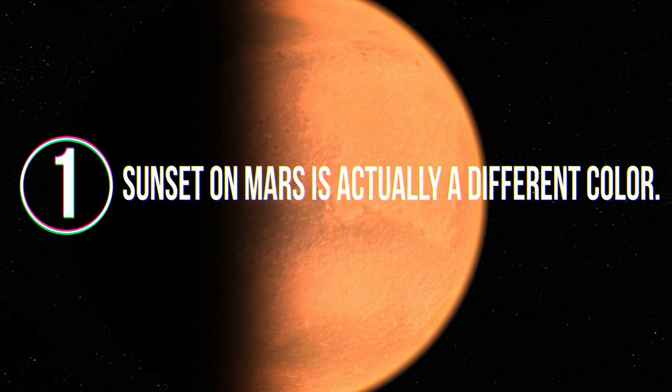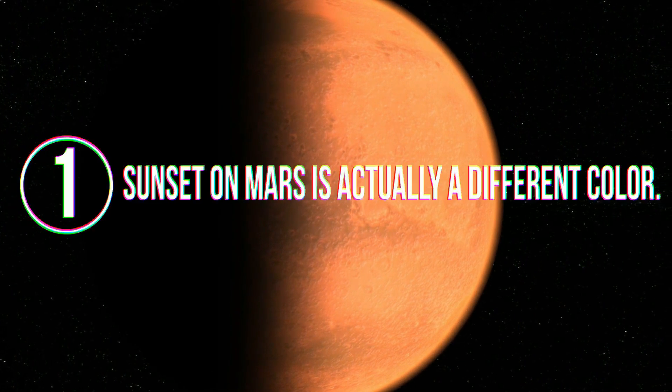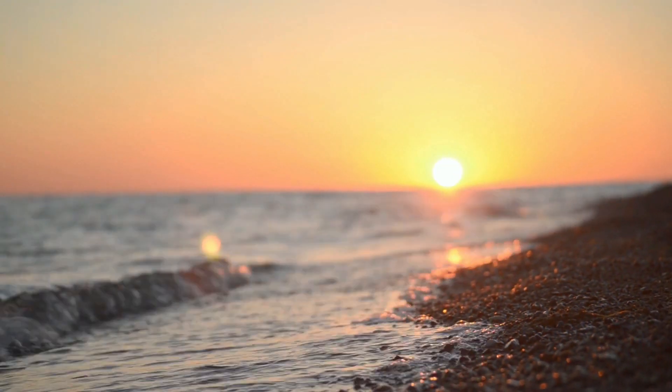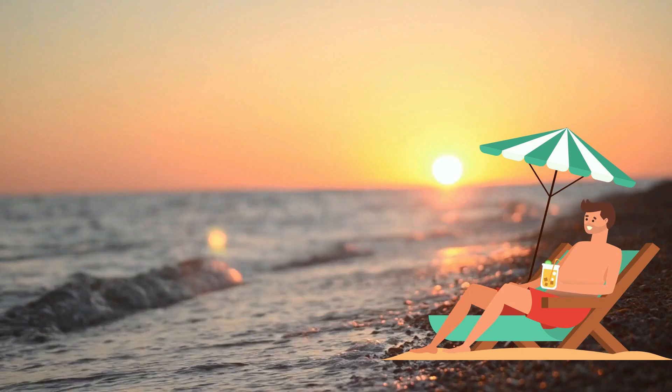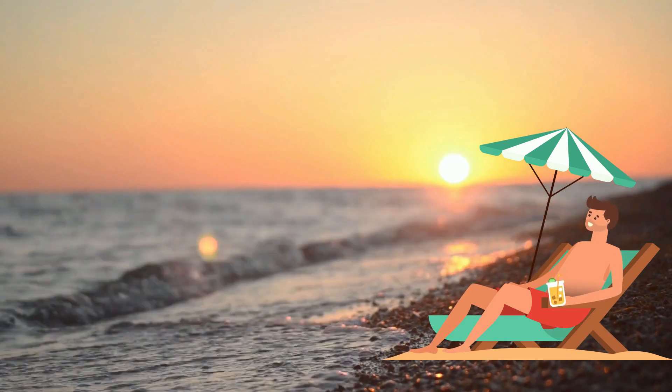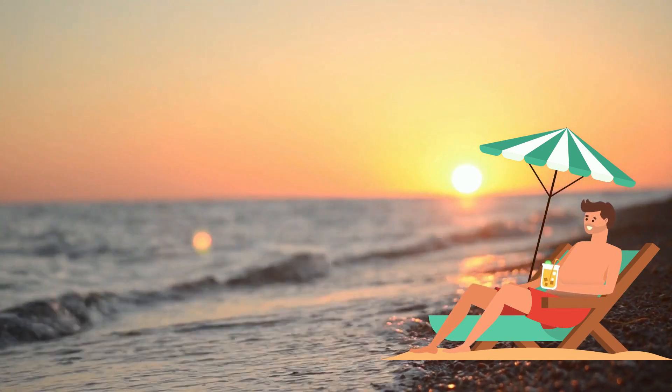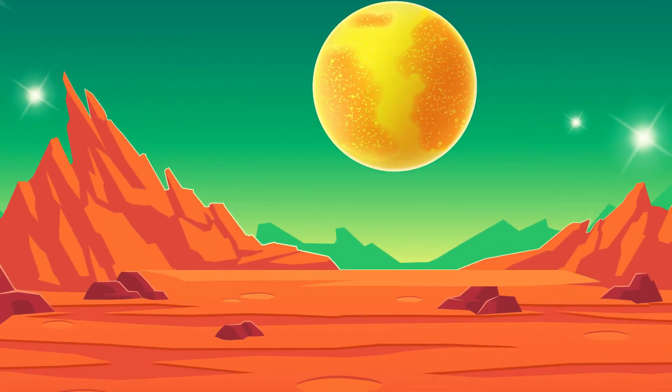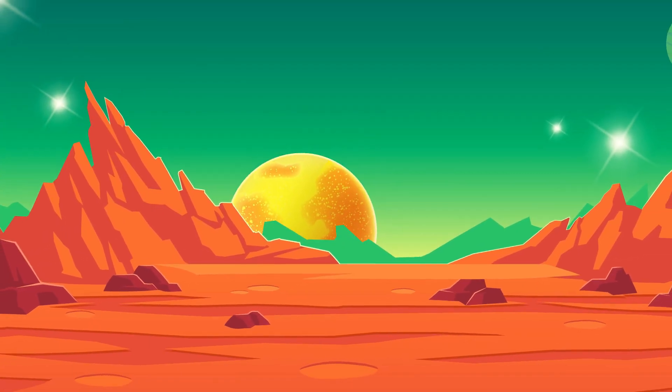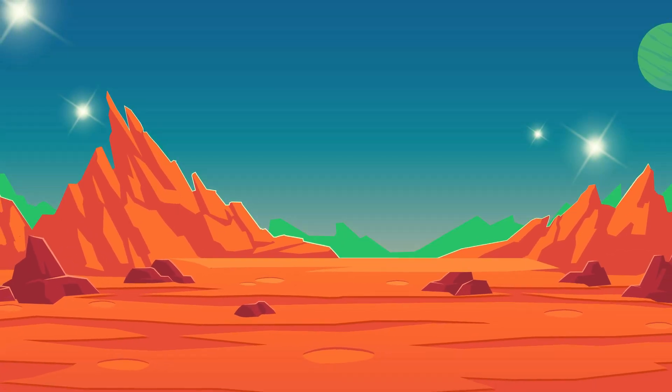Number 1. Sunset on Mars is actually a different color. Sunset on Earth is a romantic and very pretty occasion. Orange hues mixed with dull, fiery tones creates an extraordinary view. On Mars, sunset in the same manner. When the sun goes down under the horizon, the sky turns blue.